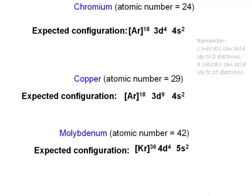Here I have represented the core electrons using the noble gas symbols. So according to the Aufbau principle, chromium is expected to have a configuration where there are 4 electrons in the 3d orbitals and 2 electrons in the 4s orbital, a 3d4 4s2 configuration. Also, copper is expected to have a 3d9 4s2 configuration, and molybdenum is expected to have a 4d4 5s2 configuration.